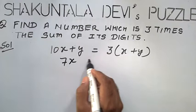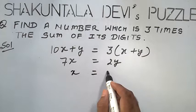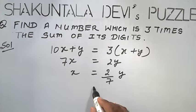By solving this equation, we get 7x is equal to 2y. x will be 2 upon 7y.